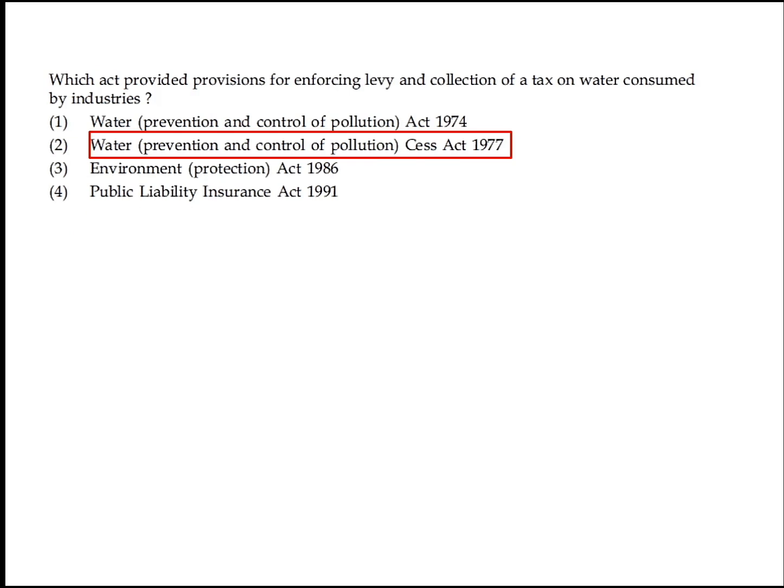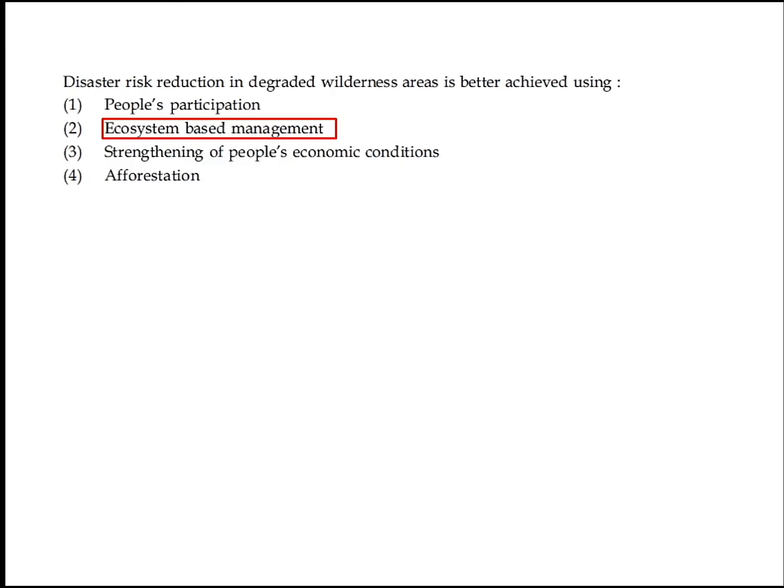Which Act provides provision for enforcing levy and collection of a tax on water consumed by industry? The Water Prevention and Control of Pollution Cess Act 1977. Option 2 is the right answer. Disaster risk reduction in degraded wilderness areas is better achieved using ecosystem-based management. Option 2 is the right answer.